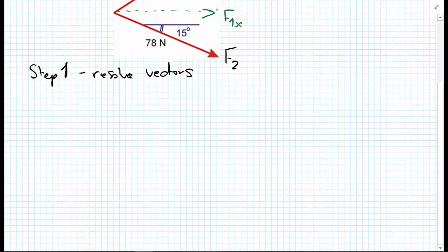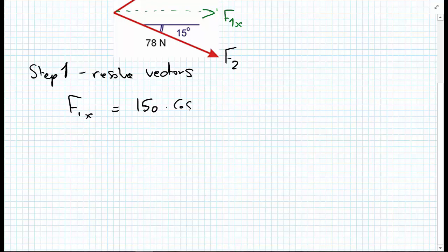F1x is equal to 150 multiply the cosine of 30 degrees, equals 129.9 newtons. Similarly, for the Y direction, F1y equals 150 multiplied by the sine of 30 degrees, which equals 75 newtons.